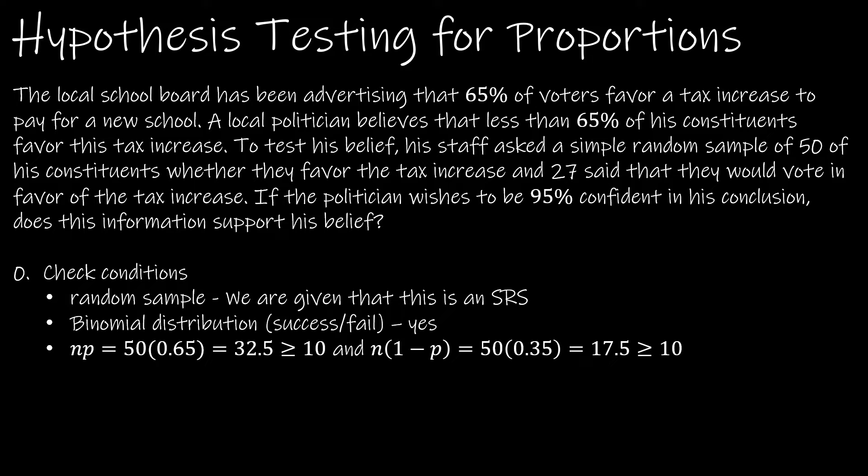Let's take a look at our first example. In this case we have a local school board has been advertising that 65% of voters favor a tax increase. So when you see a number like this, this is what we're expecting to happen. So p is going to be 0.65, which also tells us that the null hypothesis is 0.65. We go on to read that a local politician believes that less than 65% favor the tax increase.